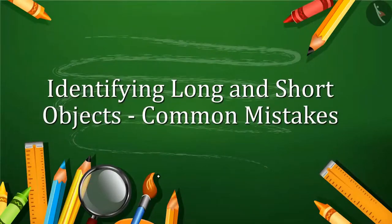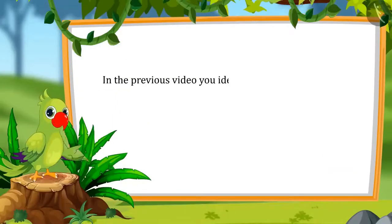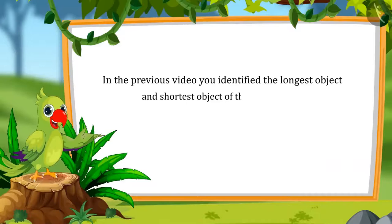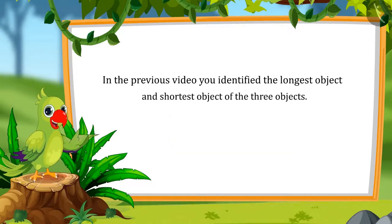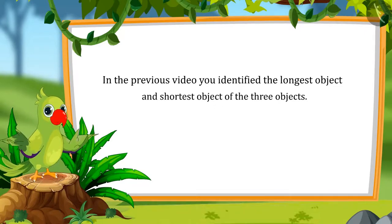Common mistakes in identification of long and short objects. So kids, in the previous video, you identified the longest object and the shortest object out of three objects. In this video, we will learn about some common mistakes in identifying long and short objects.